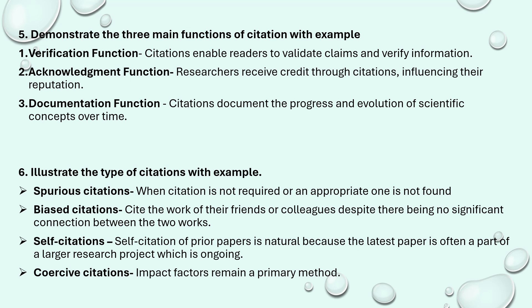Illustrate the types of citations with examples. There are four types of citations: spurious, biased, self, and coercive. Coercive citation mainly depends upon the impact factor — when you do research, you may come to know based on the H-index or i-index the impact factors of a particular paper. Self-citation is when you write a paper, publish it in a journal, and then cite your own paper in your next paper. Biased citation is when you include a friend's or colleague's paper even though it is not related to the particular topic. Spurious citation is one that is not required or appropriate — it is a citation that is never actually used. These are the four kinds of citations available; explain each with a real-time example.